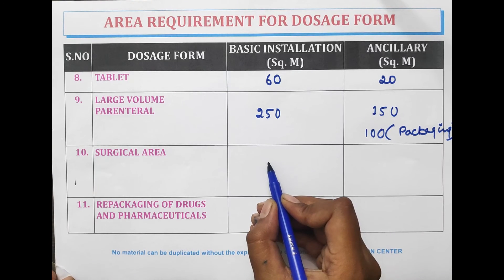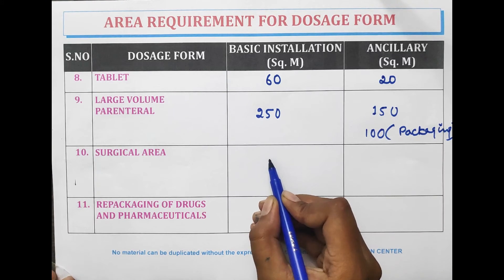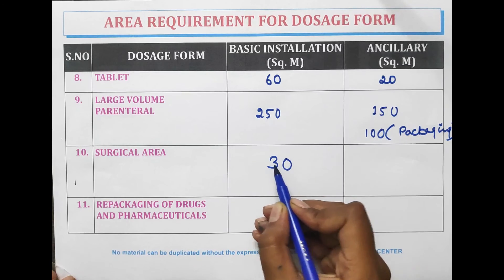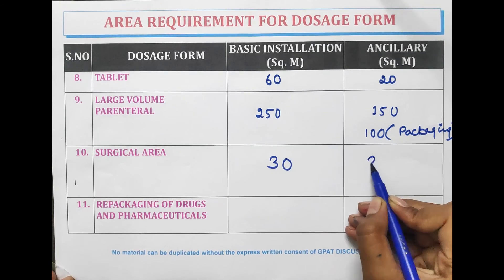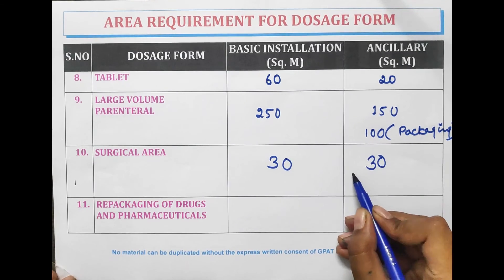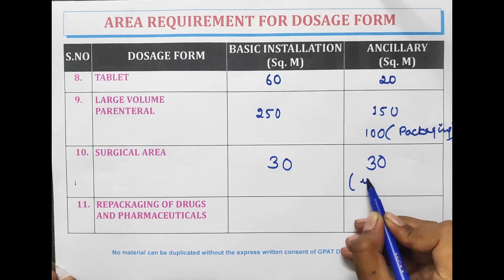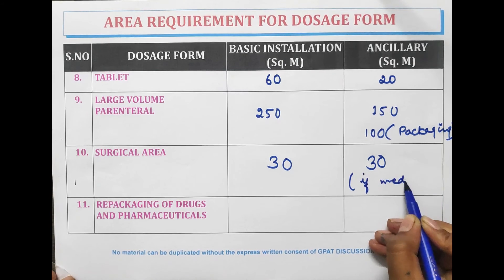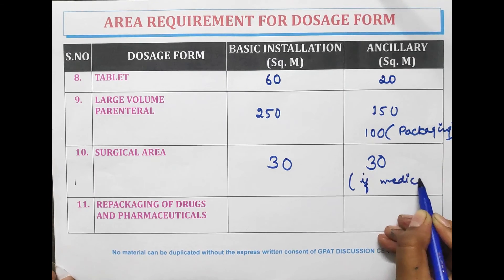For surgical area, the minimum area requirement for basic installation is 30 meter square, and it is the same for ancillary area if the surgical area is medicated.